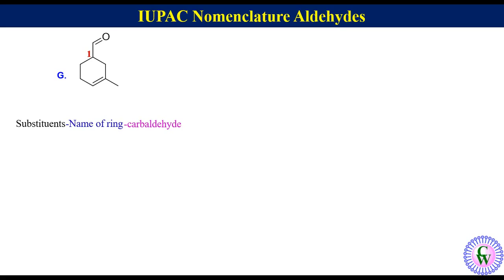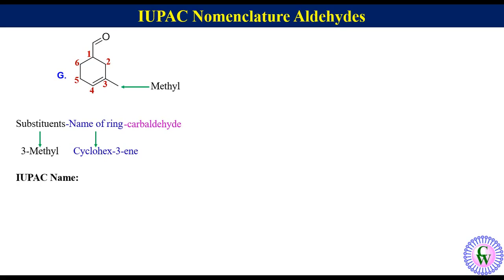So the numbering will be 2, 3, 4, 5, and 6. There is a methyl group at C3, so the substituent will be 3-methyl. The ring is cyclohexane with a double bond at position 3, so the ring name will be cyclohex-3-ene. Thus the IUPAC name of this molecule will be 3-methylcyclohex-3-enecarbaldehyde.